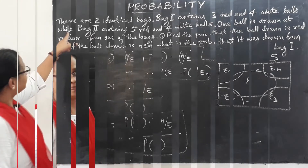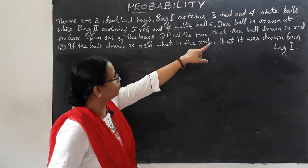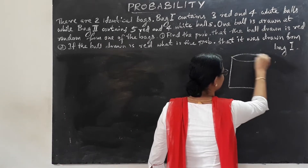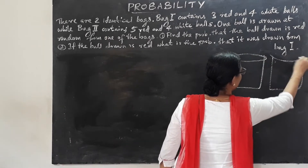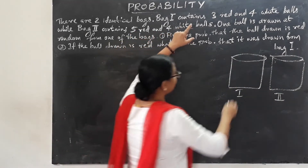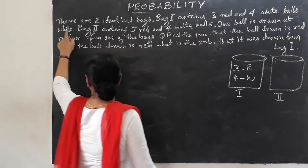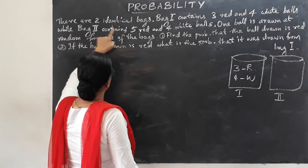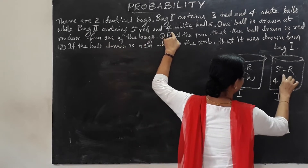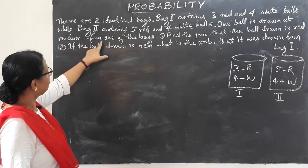This is the problem. There are two identical bags. Bag one contains three red and four white balls, while bag two contains five red and four white balls. One ball is drawn at random from one of the bags.